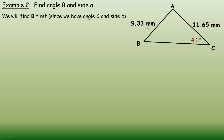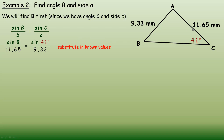The angle-side pair is angle C and side C, so we can use the sine law to find angle B because we know side B across from it. We write sine B over B equals sine C over C. Substituting in: side B is 11.65, angle C is 41, and side C is 9.33. Cross-multiplying to isolate sine B: the two known diagonal values, 11.65 and sine 41, get multiplied together, then divided by 9.33.